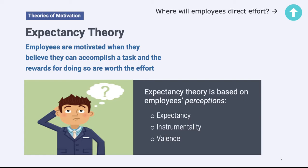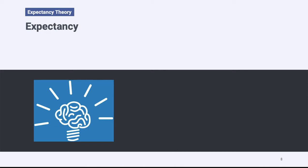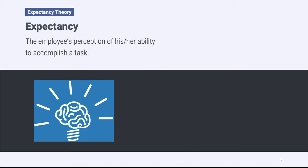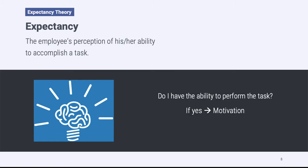Expectancy theory tells us where employees are going to direct their effort. The first perception is called expectancy, which looks at the employee's perception of his or her ability to accomplish a task. Does a person think they are able to accomplish a task? An employee will ask themselves: do I have the ability to do this task? If I believe I have the ability to perform the task, I'm going to feel motivated. If I perceive that I don't have the ability, I'm not going to be motivated.